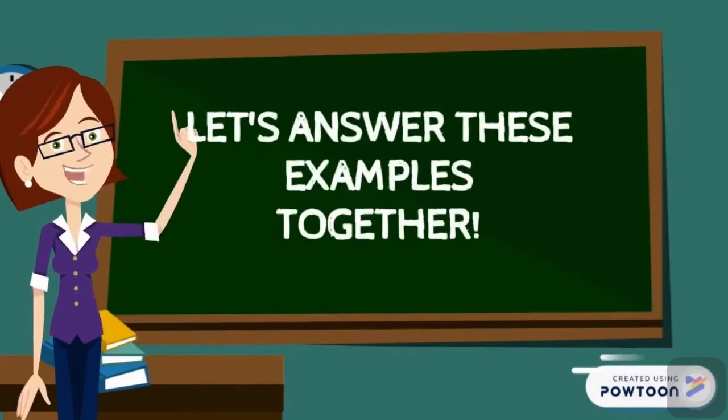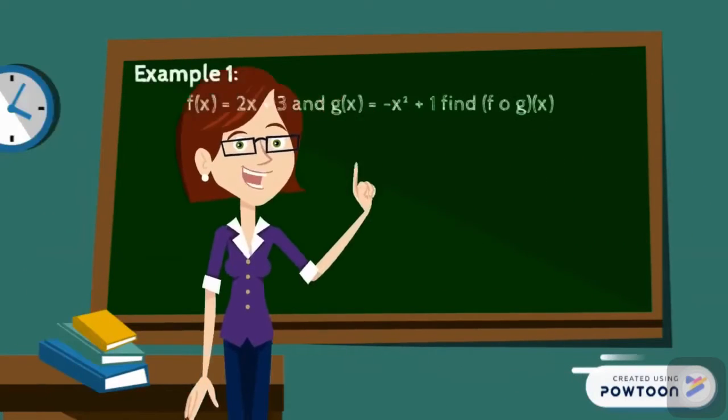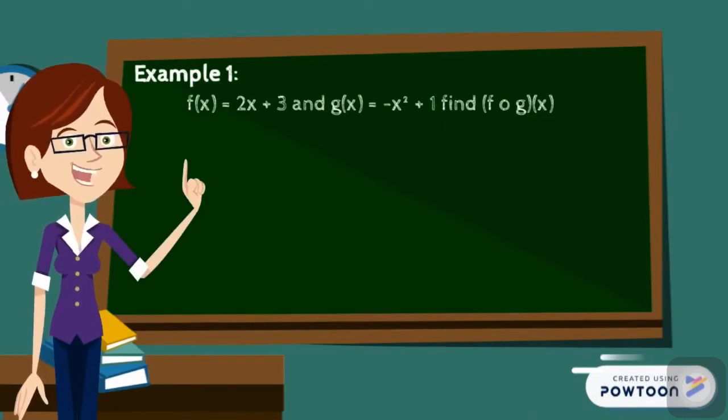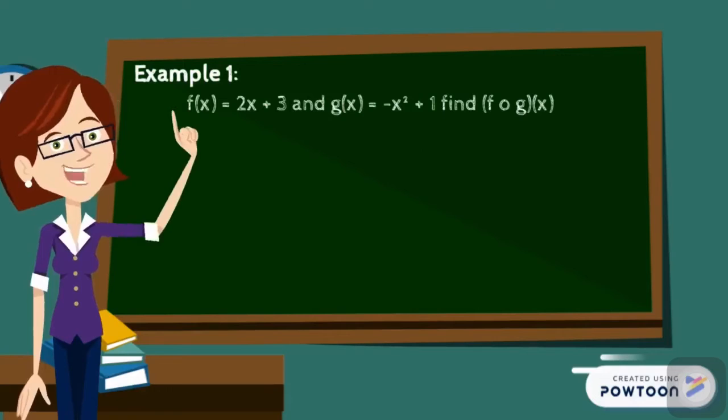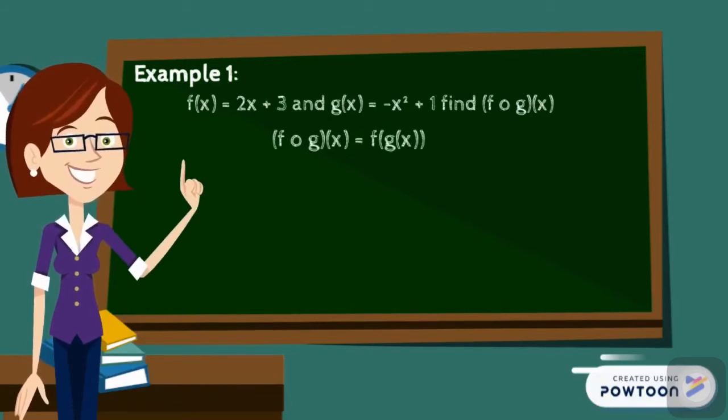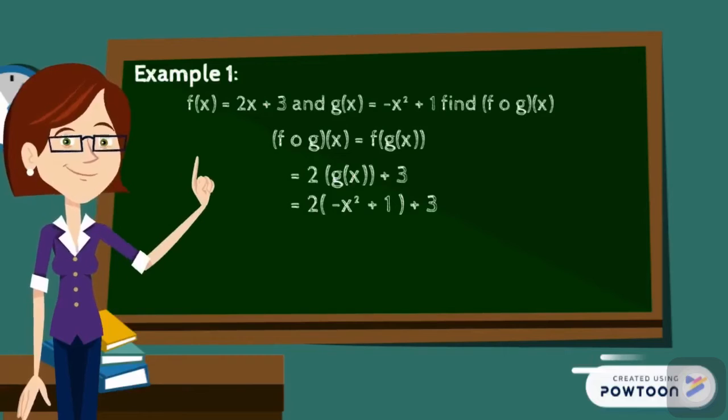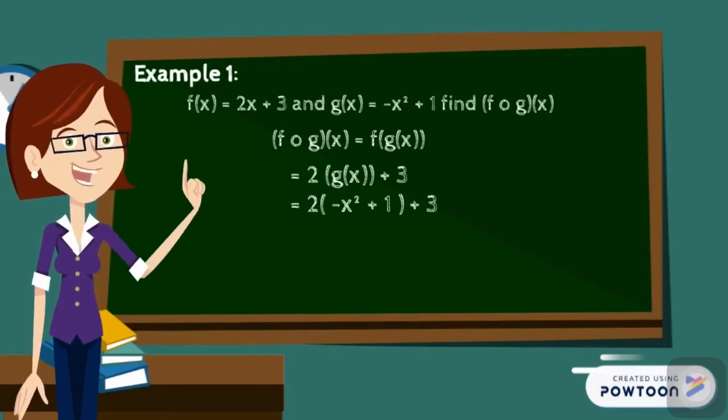Let's answer these examples together. First example, f(x) equals 2x plus 3 and g(x) equals negative x squared plus 1. Find (f o g)(x). Now we rewrite the composition as (f o g)(x) equal to f(g(x)), and then we replace x found in the outside function with the inside function. So replace x with g(x). So 2 times (negative x squared plus 1) plus 3 is equal to negative 2x squared plus 5. So that is the final answer.